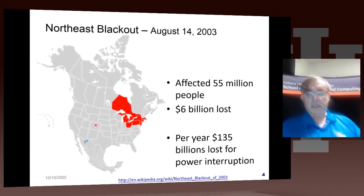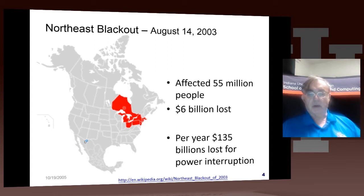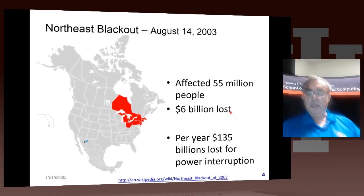An example was the very famous blackout in 2003 in the Northeast, which was due to a failure of the grid. One failure cascaded into other parts of the grid, and then the whole thing collapsed. That affected 55 million people and cost 6 billion dollars.